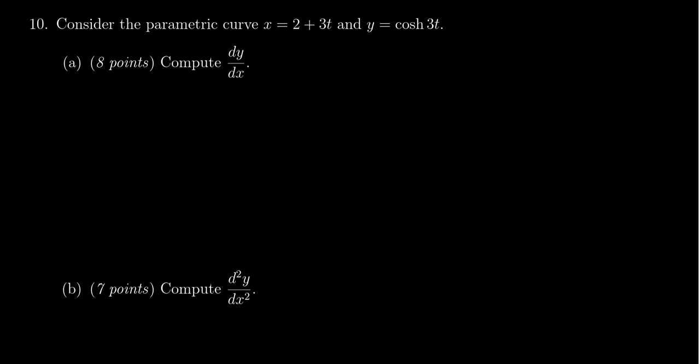The formula for dy over dx is dy over dt divided by dx over dt. So we take the derivatives of these things. We start with the top. The derivative of y, which is cosh of 3t, will be 3 sinh of 3t. The derivative of cosh is sinh, not negative sinh.